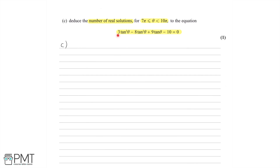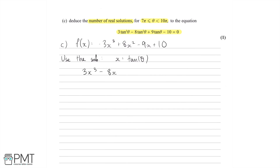Notice how strangely similar this is to f of x, which was minus 3x cubed plus 8x squared minus 9x plus 10. Using the substitution x equals tan theta, we're left with 3x cubed minus 8x squared plus 9x minus 10 equals 0. Multiplying both sides by minus 1 gives minus 3x cubed plus 8x squared minus 9x plus 10 equals 0, which is exactly f of x.